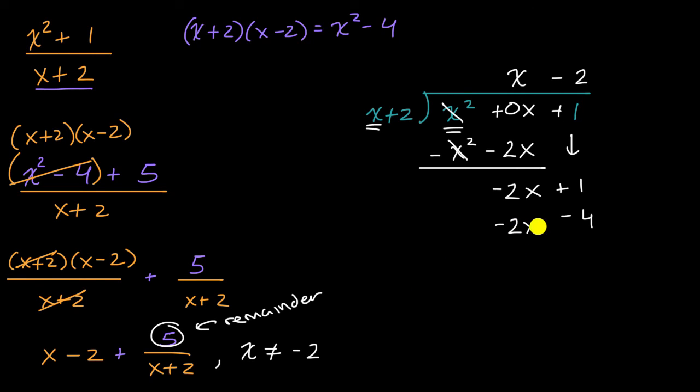Now we have to be very careful here because we want to subtract the negative two x minus four from the negative two x plus one. We could view it as this. Or we could just distribute the negative sign. And then this will be positive two x plus four. And then the two x's, the two x and the negative two x cancels out, one plus four is five.